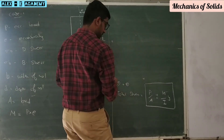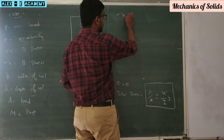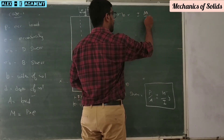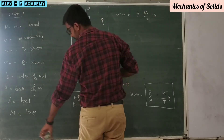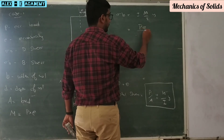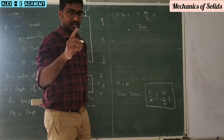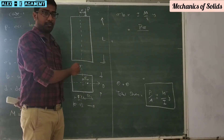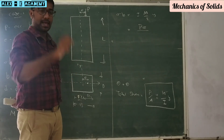The bending stress sigma B equals M by I into y. Here M equals P into E. The moment of inertia I with respect to the y-axis is D into B cube divided by 12. So sigma B equals P into E divided by I into y, substituting the moment of inertia.